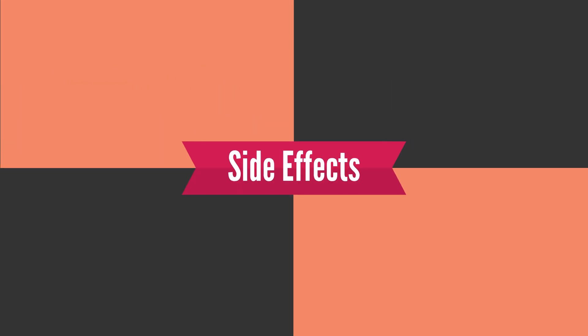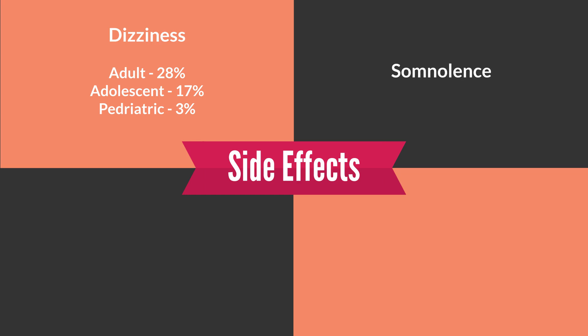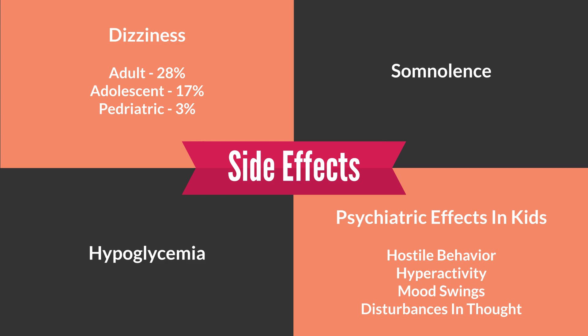Side effects include dizziness, which occurs in about 28% of adults, 17% of adolescents, and about 3% of pediatrics — so approximately one in three adults experiences some dizziness while taking gabapentin. Others include somnolence, which is also predominantly in adults at about 21%. Hypoglycemia has also been observed. There are also a host of psychiatric side effects usually experienced in the pediatric population.